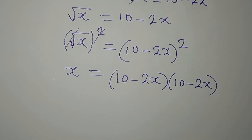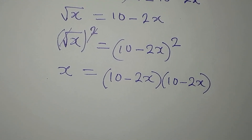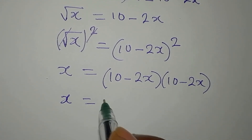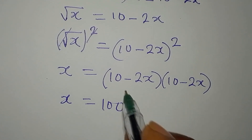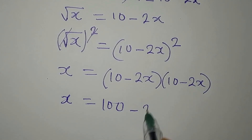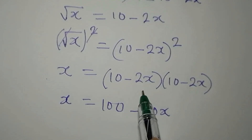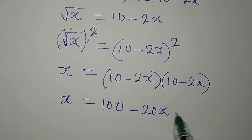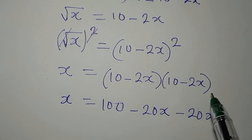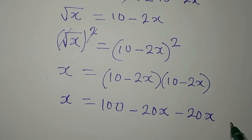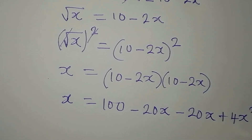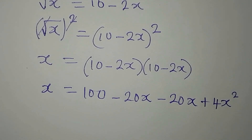The next thing to be done is to open the bracket. X will come out first. 10 times 10 is 100. 10 times minus 2x, that will be minus 20x. Minus 2x times 10, another minus 20x. Then minus 2x times minus 2x will give us plus 4x squared.